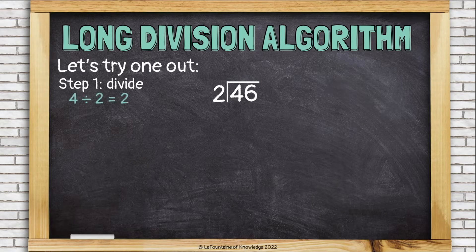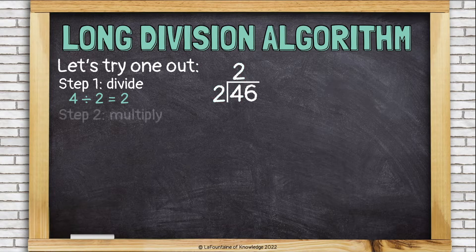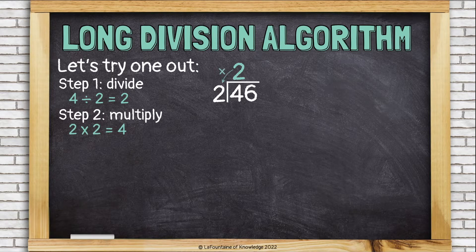I'm going to start with the four, the first digit under the bracket, and divide it by two. Four divided by two is two. That goes on top — the answer, the quotient, always goes on top of the bracket. Now step two, multiply. I'm going to take that two I put on top and multiply it back by the divisor, the other two. Two times two is four, and that goes right underneath the other four.